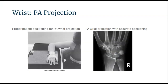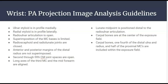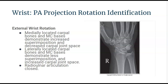Here is a slide with the patient in a PA positioning for a wrist, and I have included those image analysis guidelines within the presentation. Let's talk about identification of rotation in a PA wrist projection. In anatomical positioning, this side is considered your lateral wrist and this side is considered your medial wrist, especially when talking about anatomical terminology in this identification of rotation.